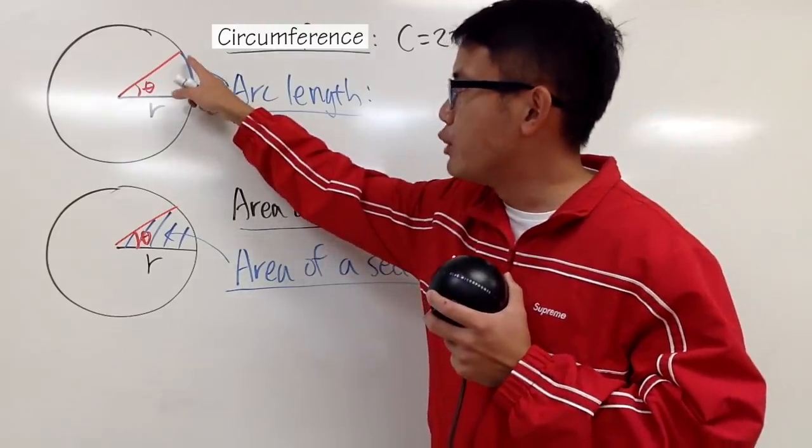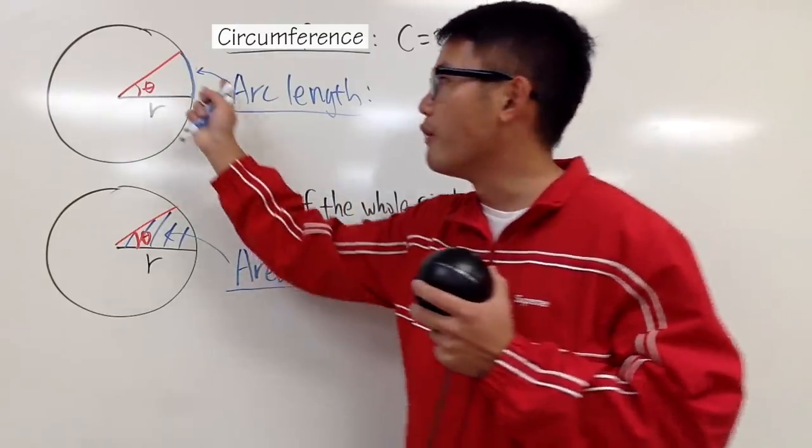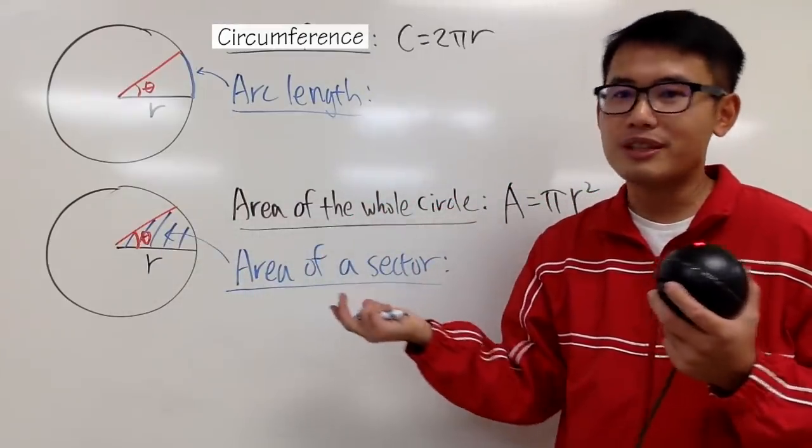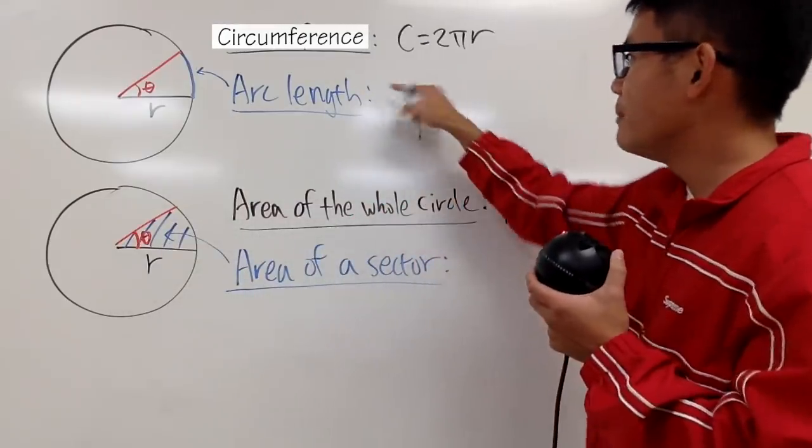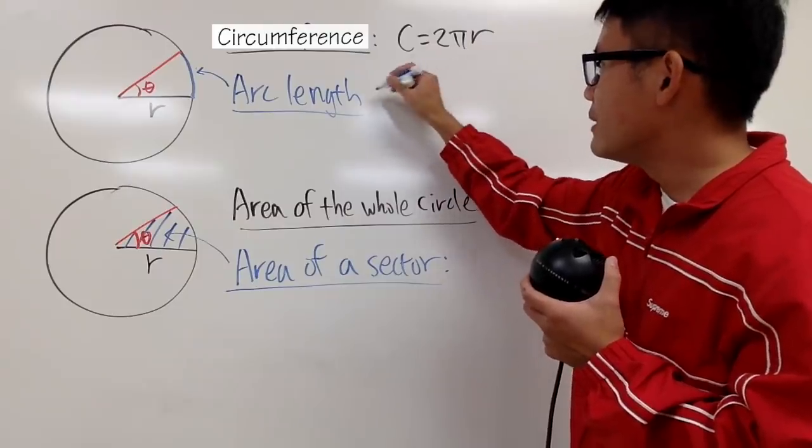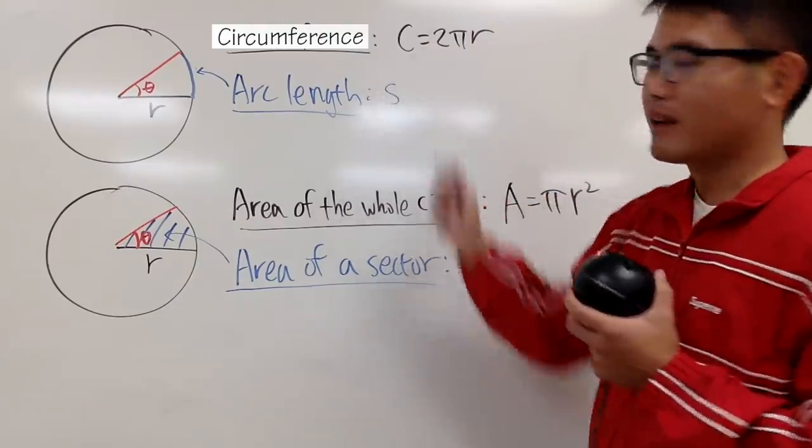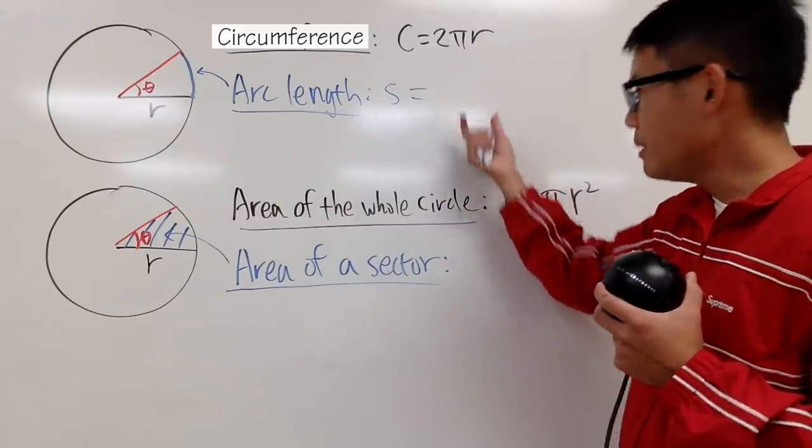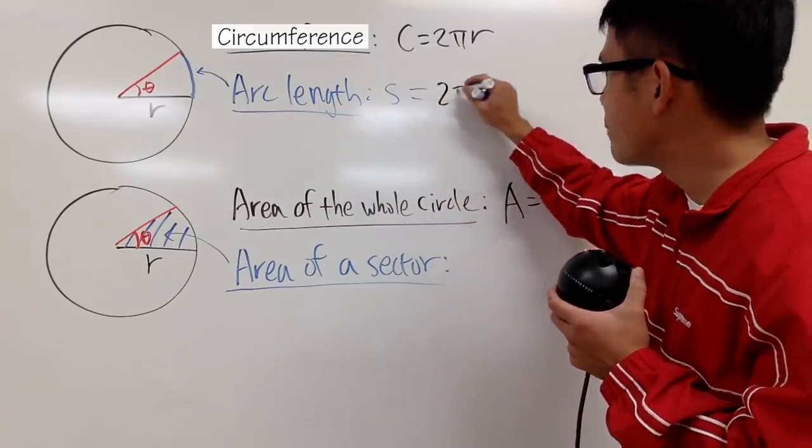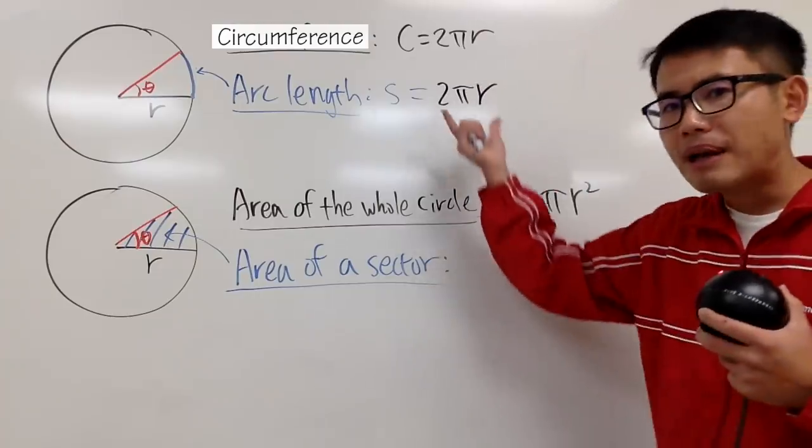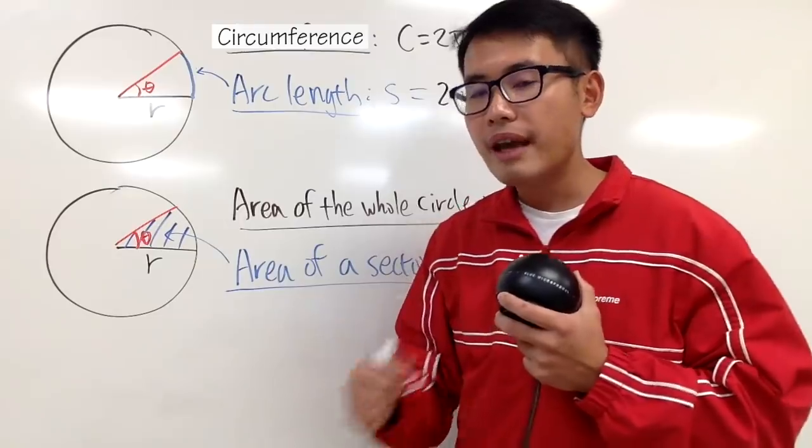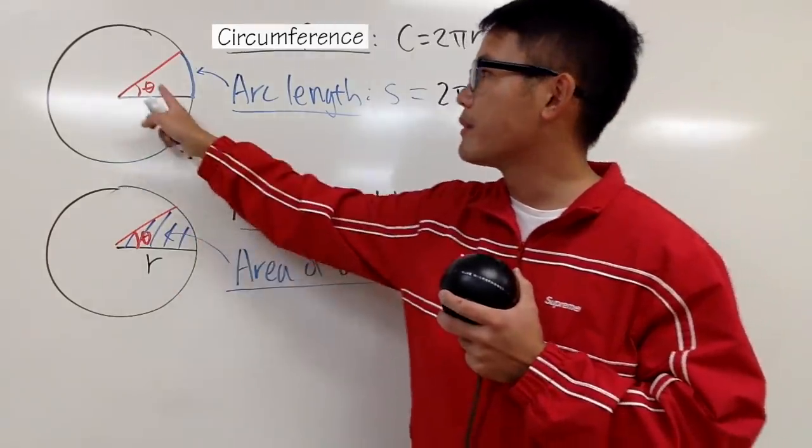You see that the arc is pretty much just a portion of the circumference. And if you know the ratio of that portion, that's pretty much it. So, let me just write it down for you guys. I need to know the whole thing first, so let me put that down. We have that 2πr. But this is the whole thing. This right here is just a small portion, and the portion is going to be here, is the angle.